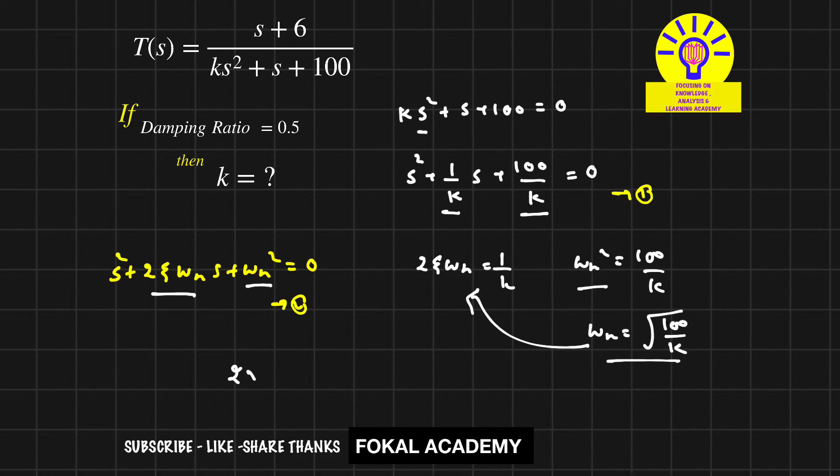We get 2×ζ×√(100/k)=1/k. Since ζ=0.5=1/2, this becomes 2×(1/2)×√(100/k)=1/k, and the 2 cancels.